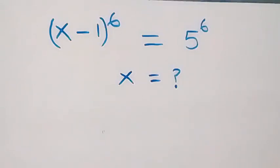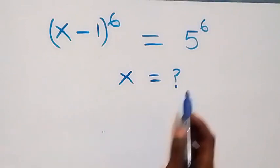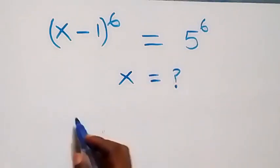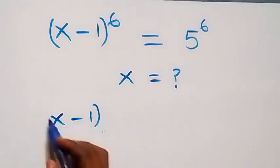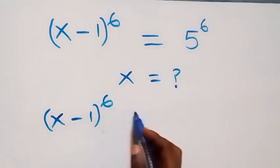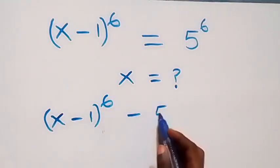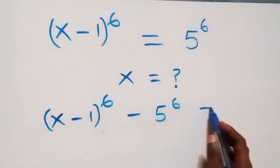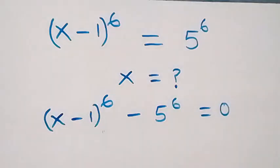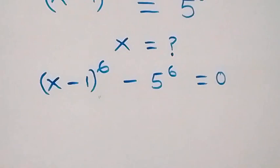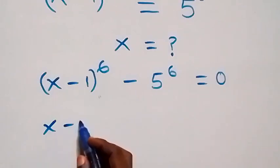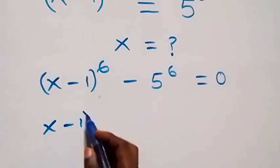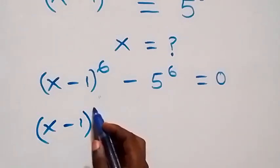Hello, you are welcome. How to solve for x in this exponential equation. Here, let's take this side to this side, and we have x minus 1 raised to power 6, minus 5 raised to power 6, equals to 0.